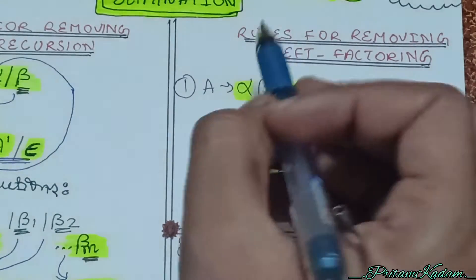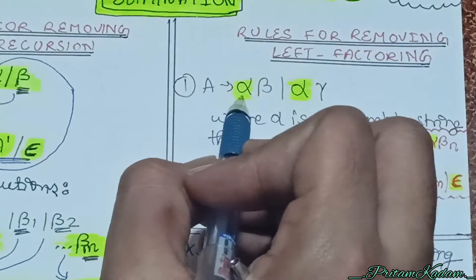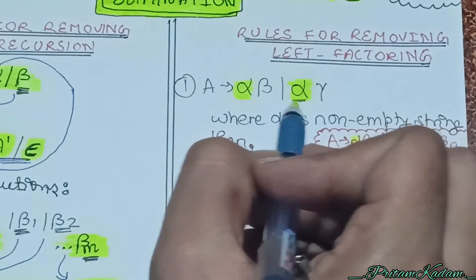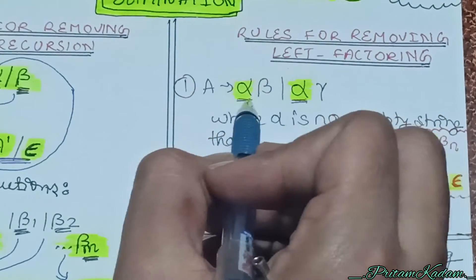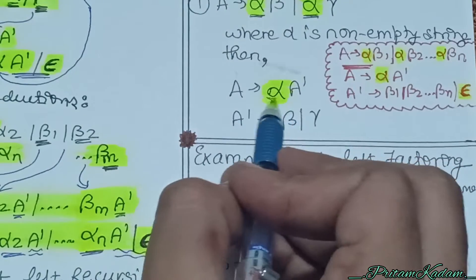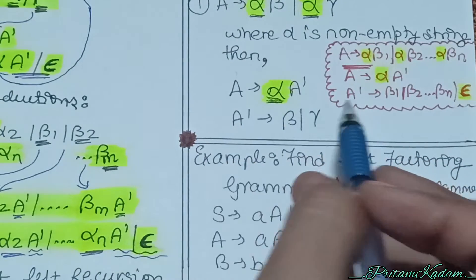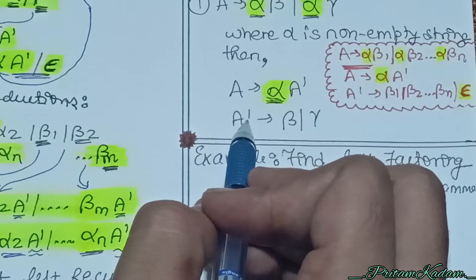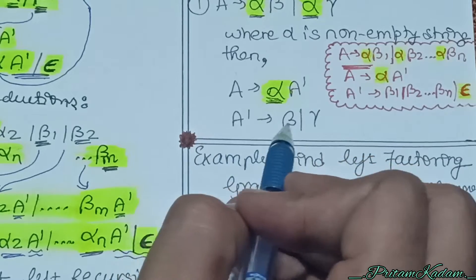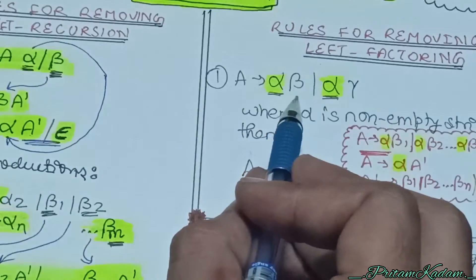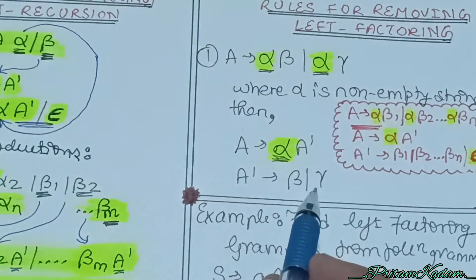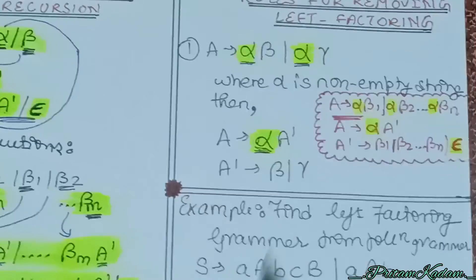Now let us see the rule for removing the left factoring. We have alpha in the first production and the second production also. What I will do is write alpha only once and then A'. From the first production I will write beta, and from the second I will write gamma.